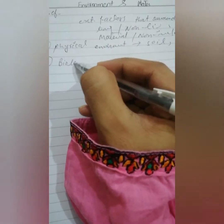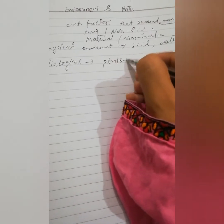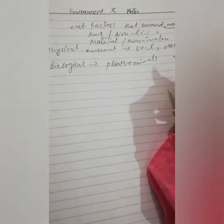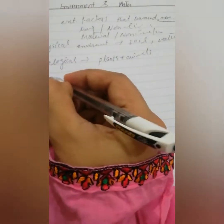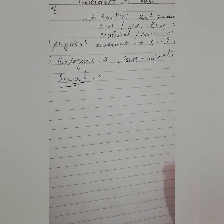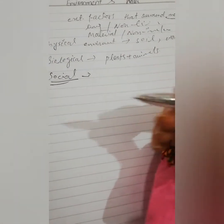Number two is biological environment. Biological environment includes all living things — mainly plants and animals — and we also have insects, viruses, and bacteria. Number three is social environment. Social environment includes customs, culture, habits, income, occupation, and religion.